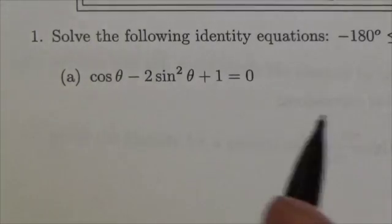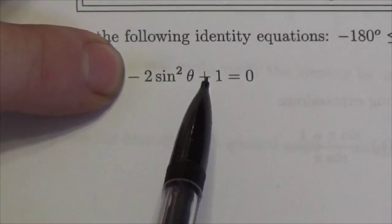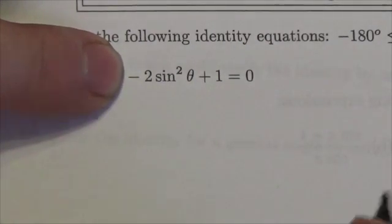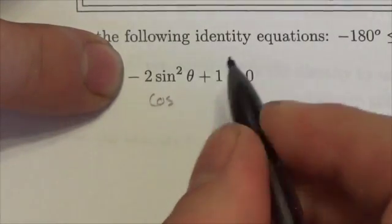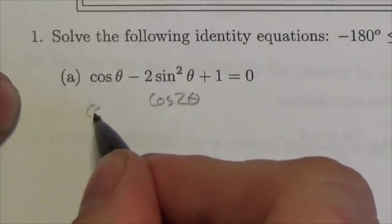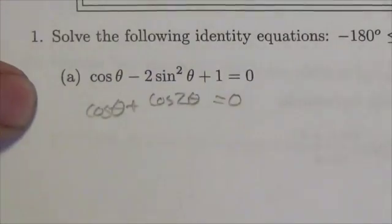So I'm looking for identities. Now, you might notice right off the bat that 1 and negative 2 sine squared of theta, that's going to equal cosine of 2 theta. And we might say, well there we go. Cosine of theta plus the cosine of 2 theta equals zero. But this puts us in another problem.